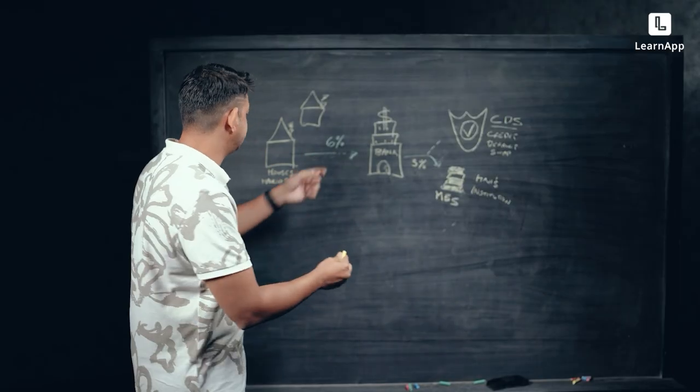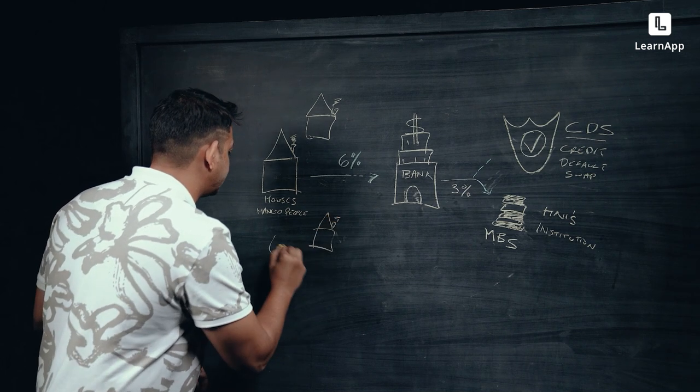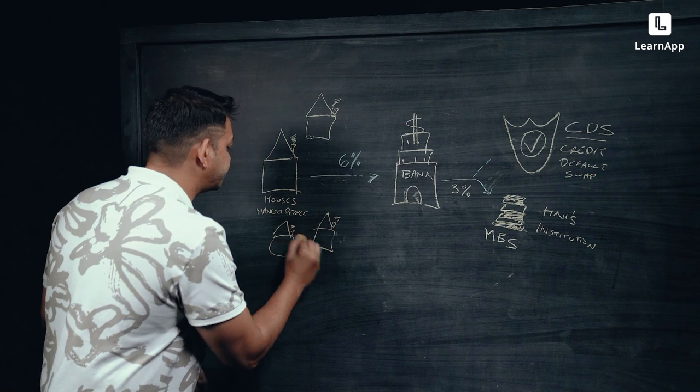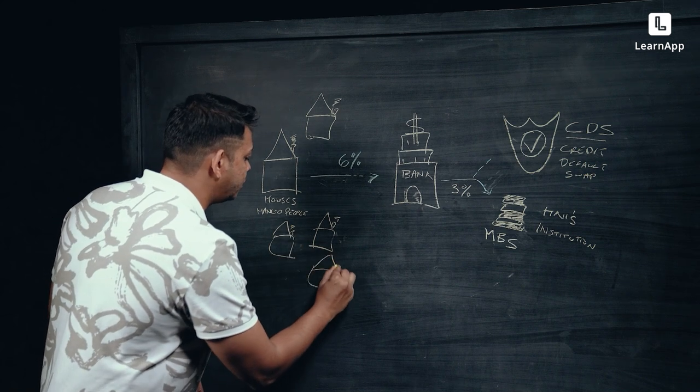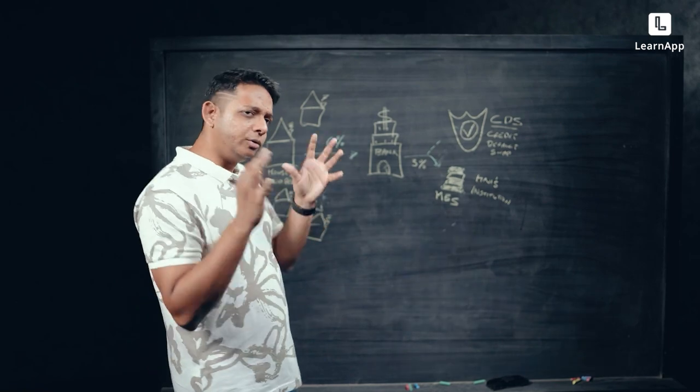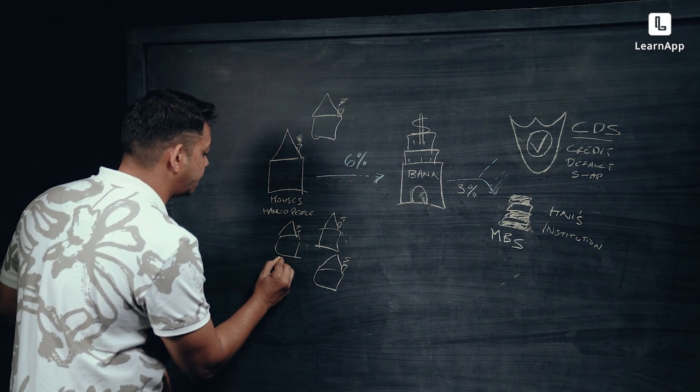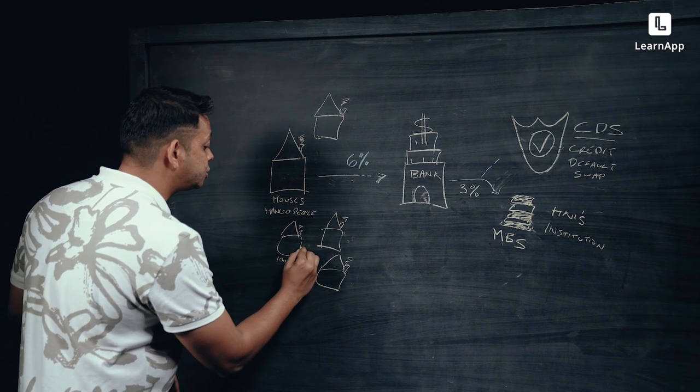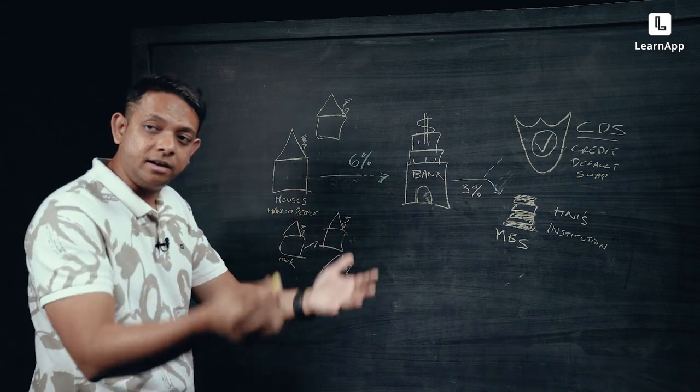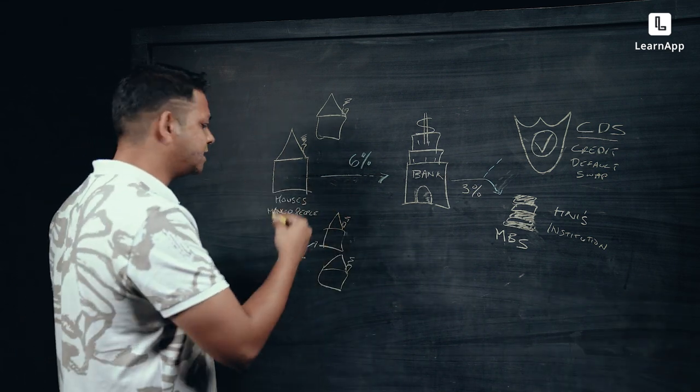Now, the reason that the CDS exists is because this is considered to be high grade, good paper. But this is where things changed and this is where the Lehman crisis actually happened. What happened was, in the unlimited need for greed, they started giving houses to everyone. There is even a story of a stripper who got loans worth $15 million, who purchased many houses in just a period of a week. And she could not actually afford that house.